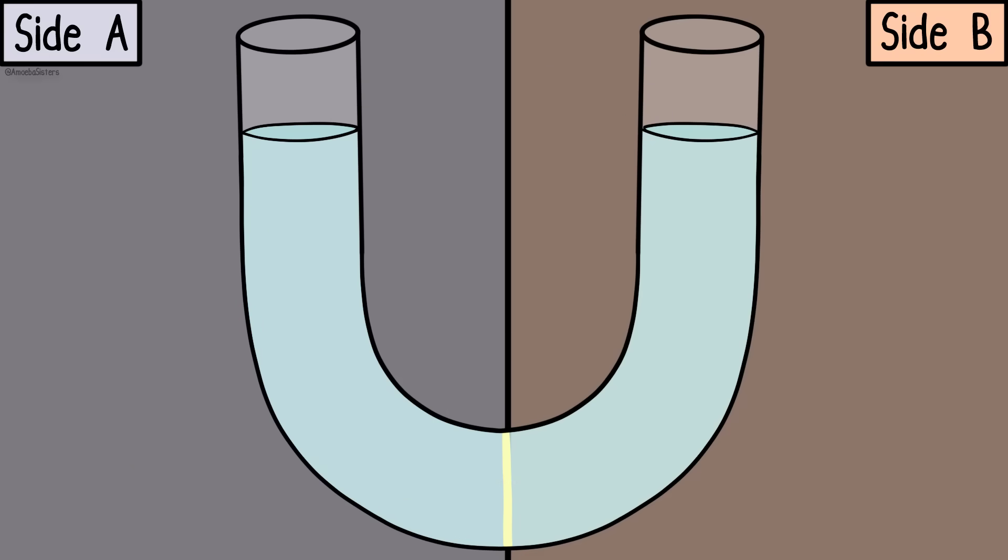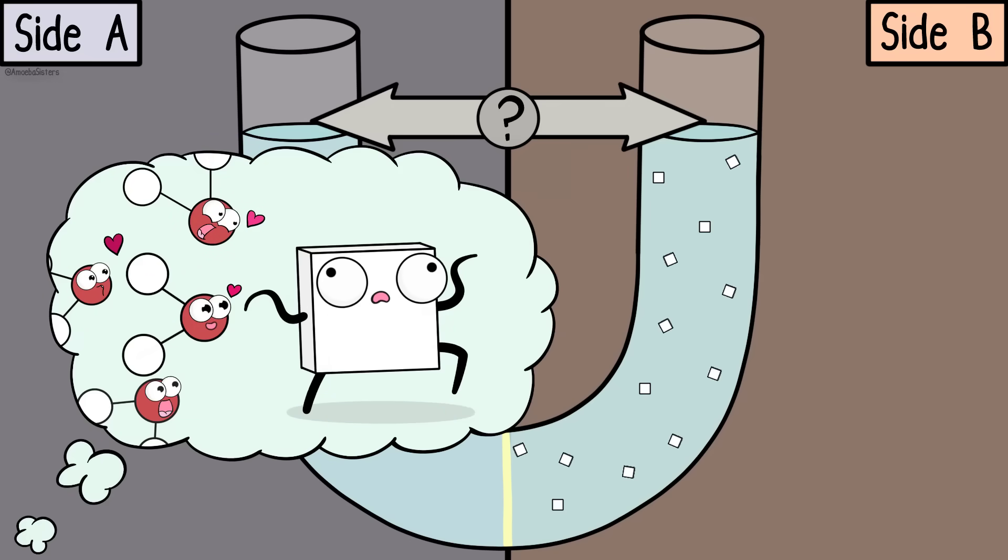Now let's imagine on side B you dump a huge amount of salt there. So which direction will the water initially move towards? A or B? Think about what we mentioned with osmosis. The answer is B.